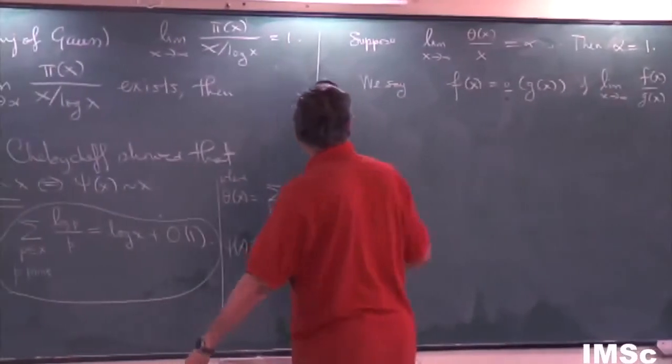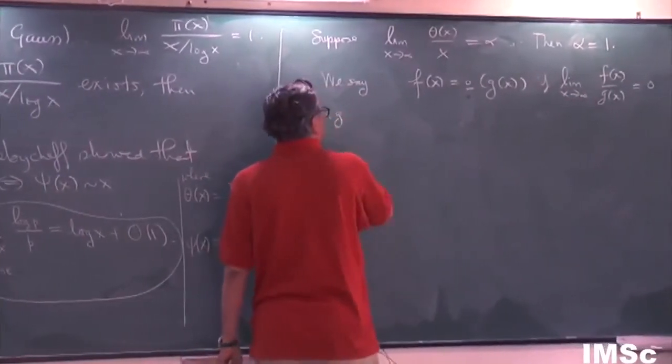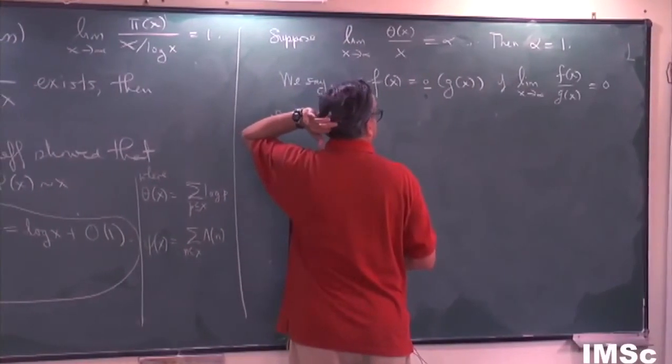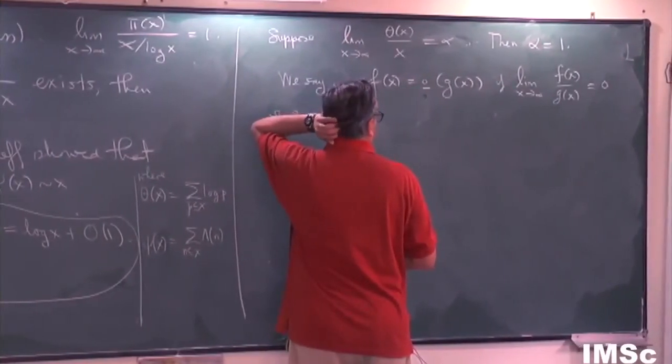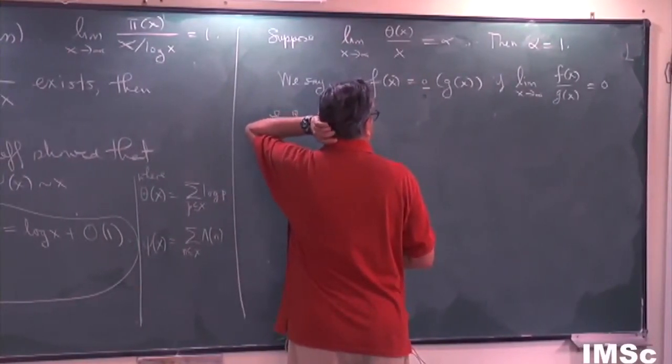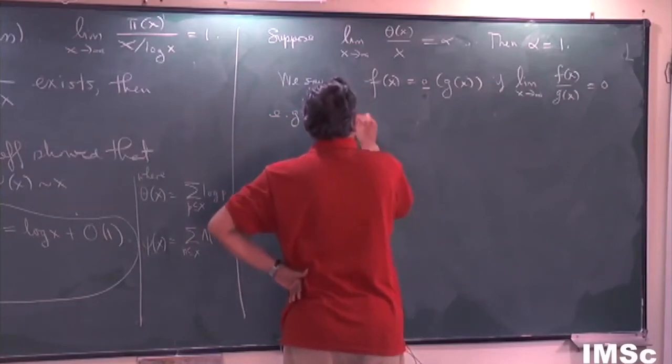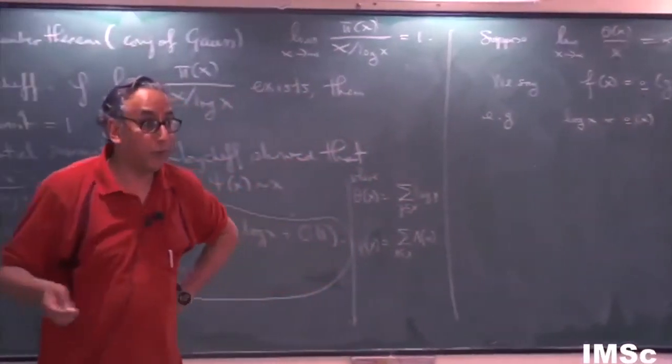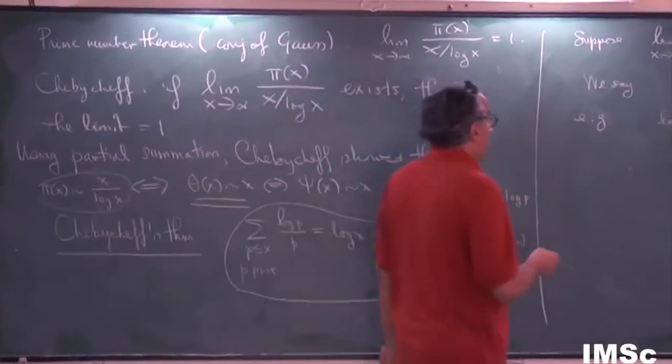So for example, we have log x is equal to little o of x, right? Because log x divided by x goes to zero as x goes to infinity.